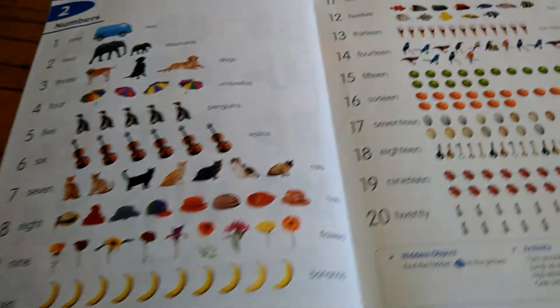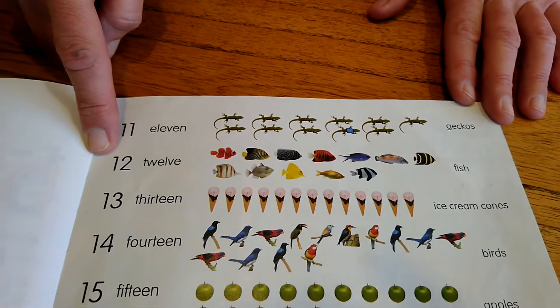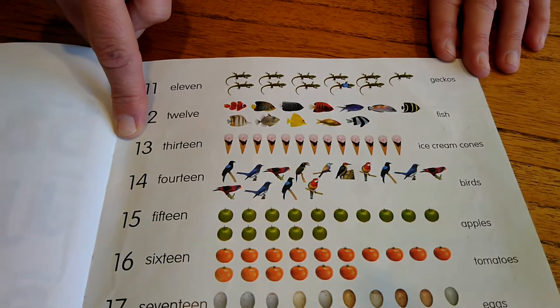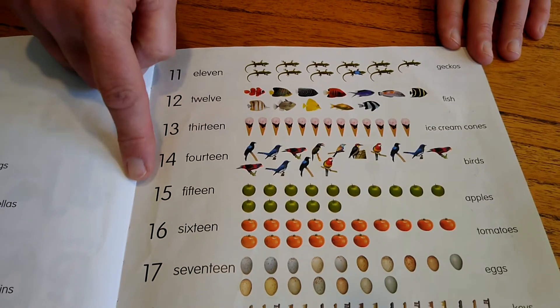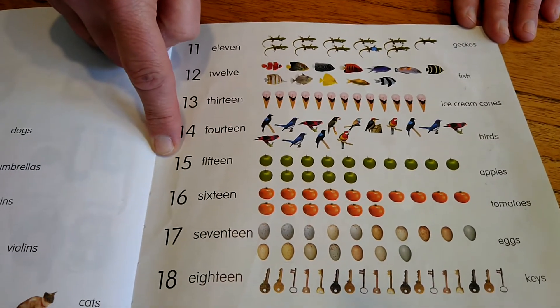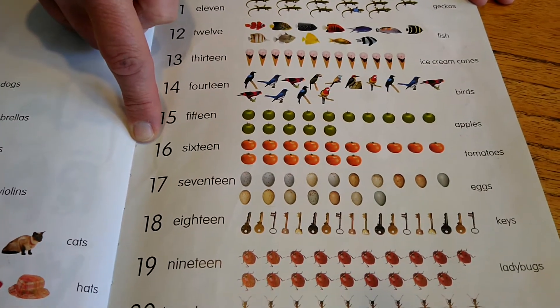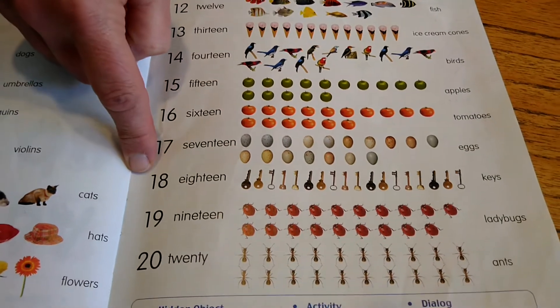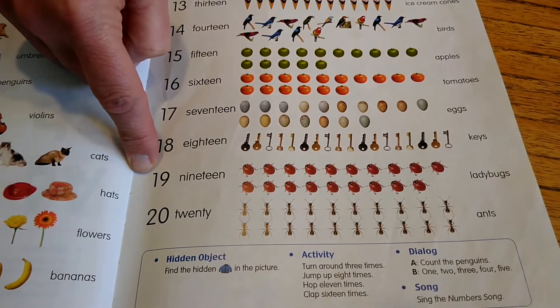Then we have eleven, twelve, thirteen, fourteen, fifteen, sixteen, seventeen, eighteen, nineteen.